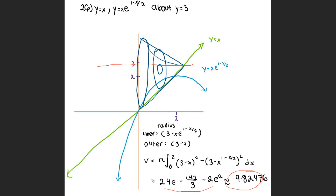The teacher asks the student to adjust the picture so the line y = 3 is clearly above the region. The student acknowledges the region needs to be shifted up. The teacher notes the student forgot to include the 'e' in the inner radius expression. The picture should be symmetric about y = 3.